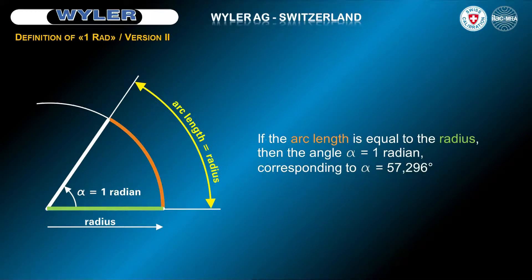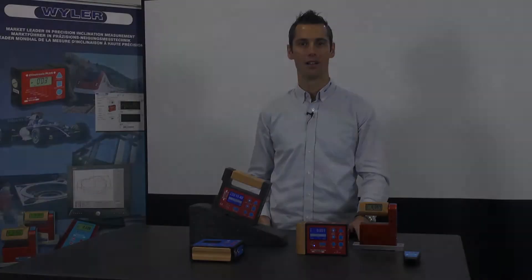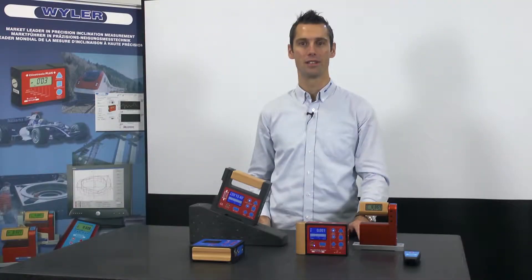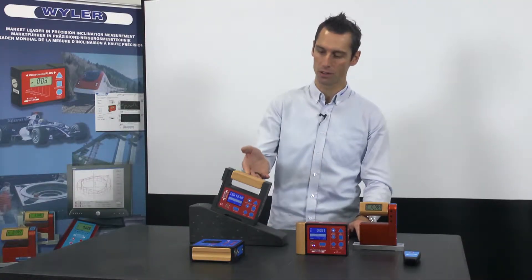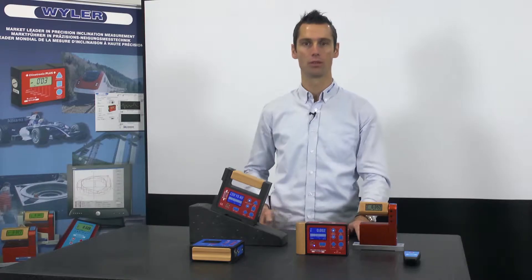Alternatively, a radian can also be represented as follows: if the arc length is equal to the radius, this corresponds to one radian.